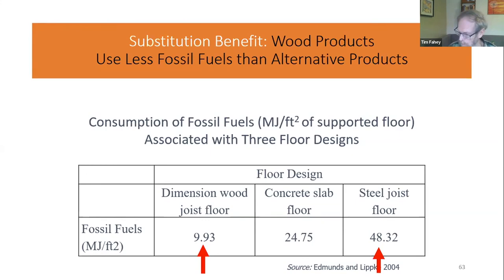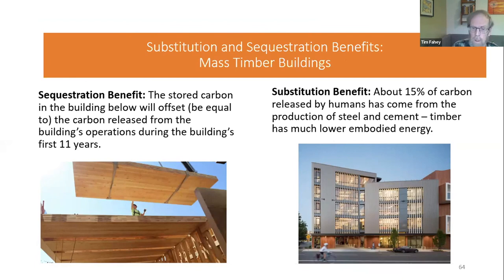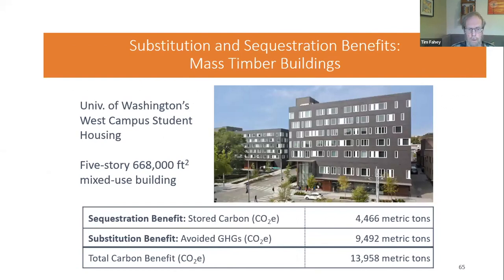The subject of mass timber buildings has gotten a lot of attention. This is a relatively new technology: wood engineers have figured out how to glue and nail together pieces of wood in a way that makes very strong structural material, so you can now build multi-story buildings out of wood rather than steel. That's a sequestration benefit because of the carbon stored in the building, and also a substitution benefit because there's less carbon associated with fossil fuels in producing the materials — steel and cement — than in producing wood. The figures shown here indicate the substitution benefit for a dormitory at the University of Washington is about twice the sequestration benefit, but both are a big benefit from the standpoint of carbon climate mitigation.